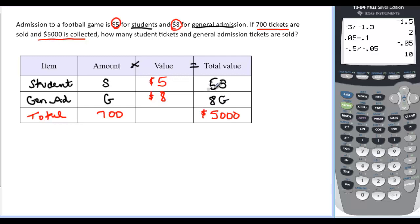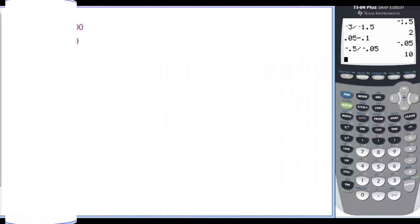amount times the value is equal to the total value. So this would be 5S and 8G. If I take the number of tickets that I sell for students and multiply that times five and add to that the number of general admission tickets times eight dollars for each one, I should get a total of $5,000. And if I take those total number of student tickets plus the total number of general admission tickets, there should be 700 of them. So S plus G is 700. 5S plus 8G is 5000, which is what we have here.